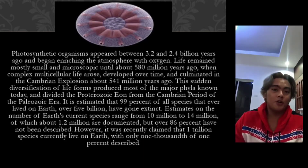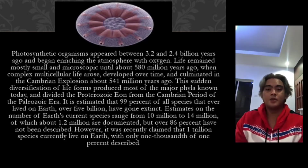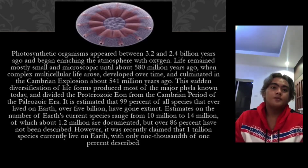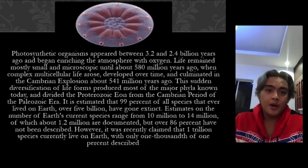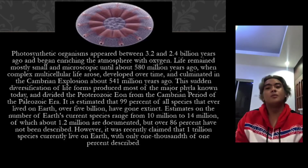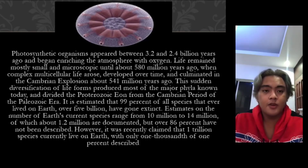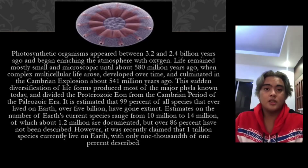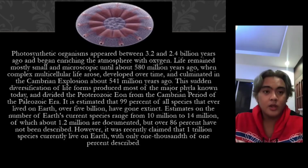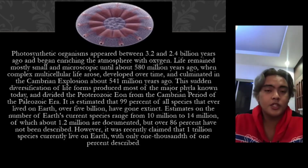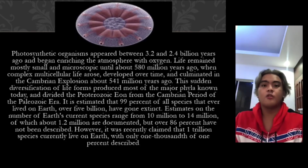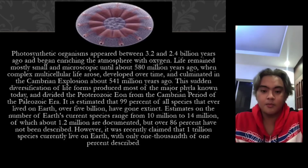Estimates on the number of Earth's current species range from 10 million to 14 million, of which about 1.2 million are documented, but over 86% have not yet been described. However, it was recently claimed that 1 trillion species currently live on Earth, with only 1,000th of 1% described.